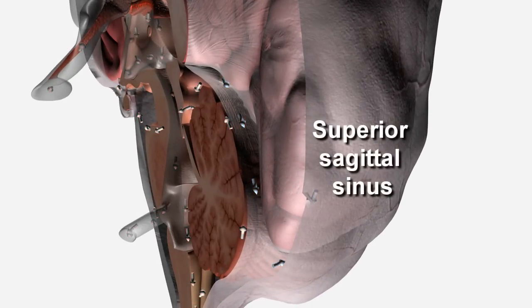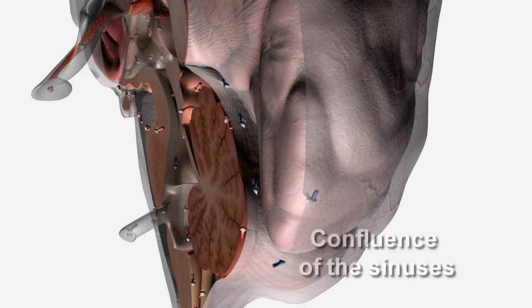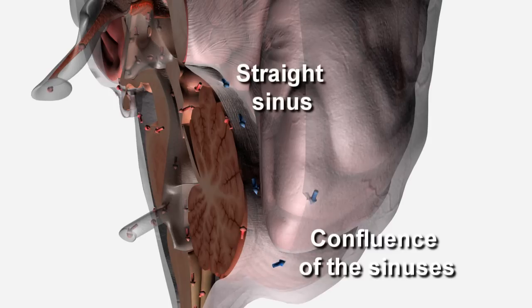It then flows down the posterior surface towards what is called the confluence of the sinuses, where it joins the venous blood flowing from subcortical regions via the straight sinus.